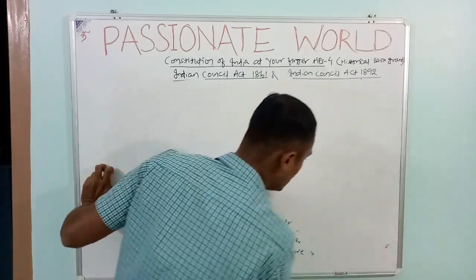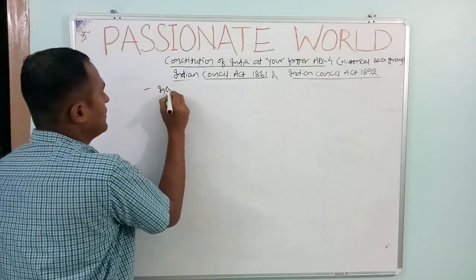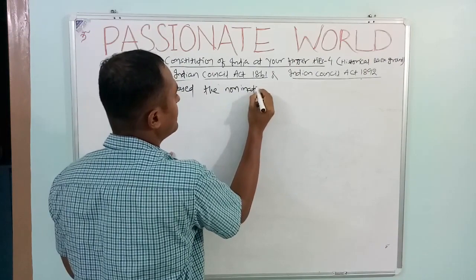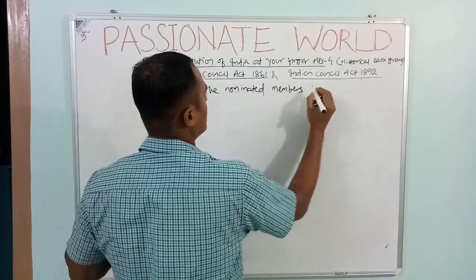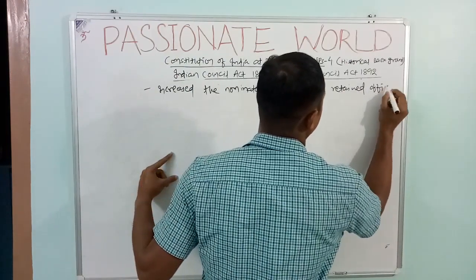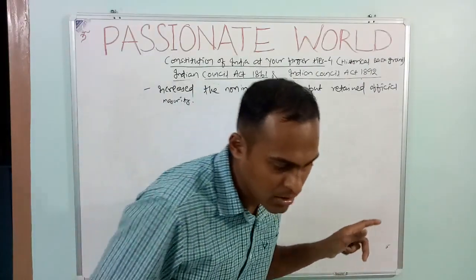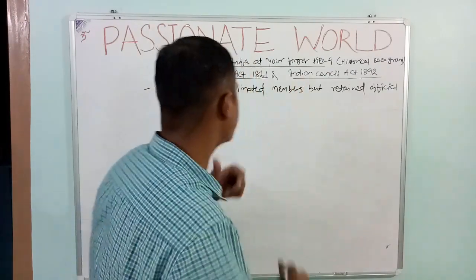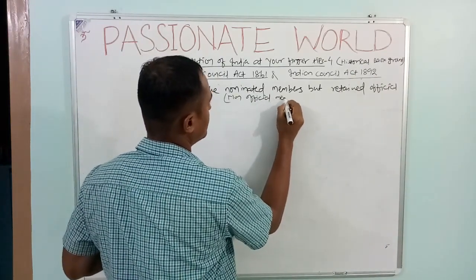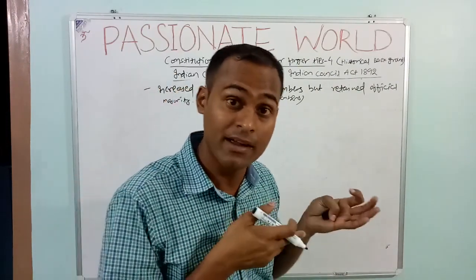Now we will move to the Indian Council Act 1892. The Indian Council Act 1892 increased the nominated non-official Indian members in the councils, but retained the official majority. This ensured that the British decision-making process would not be influenced by the Indians in the council.